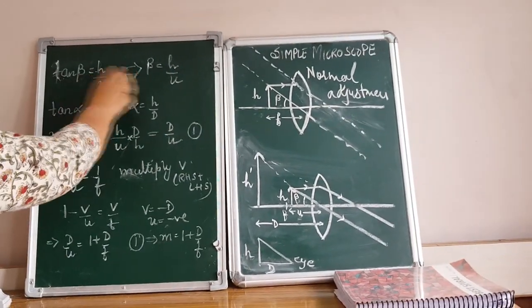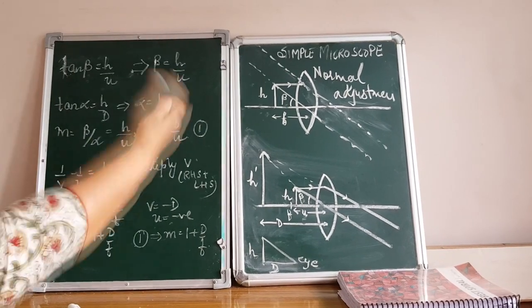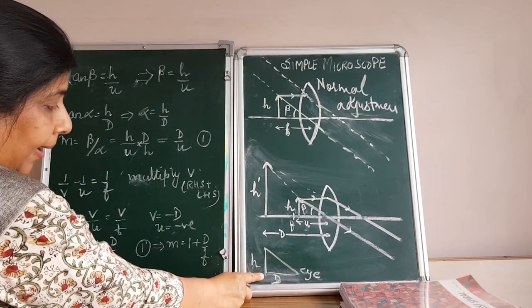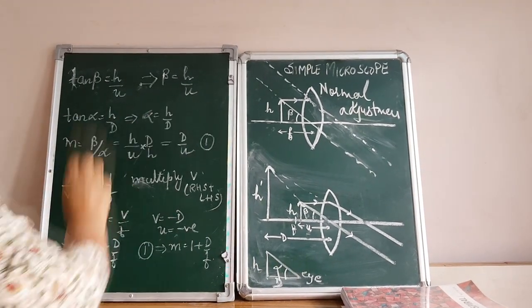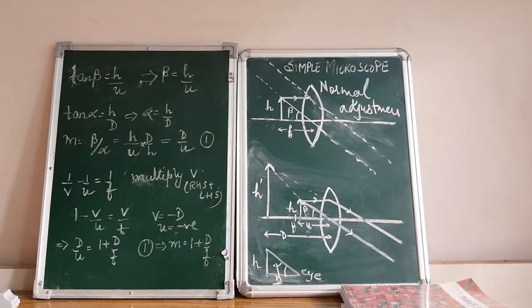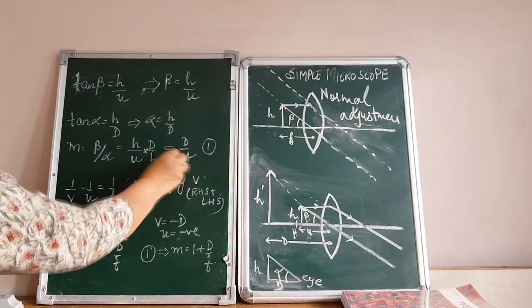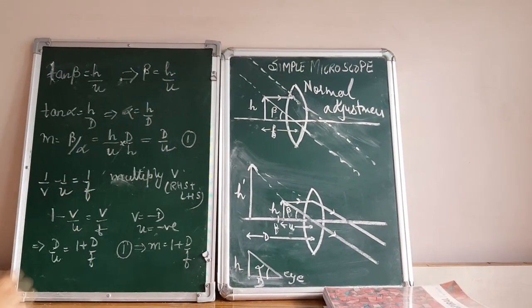This angle beta is going to be very, very small. And from the previous figure, tan alpha was equal to H by D, alpha equal to H by D. Substituted in the similar manner as the previous case, we get magnification as D by U.